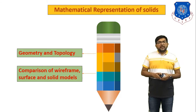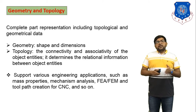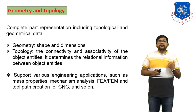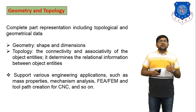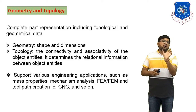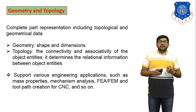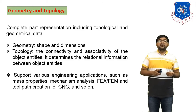So what is geometry and what is topology? Complete part representation includes topological and geometrical data. In geometry there are two things covered: first, the shape of any object, and second, the dimension of any object. In topology, the connectivity — how to connect any two objects or two elements — is topology. The connectivity and associativity of object entities determine the relational information between object entities.